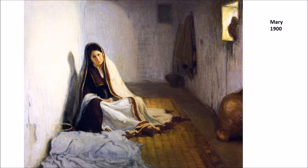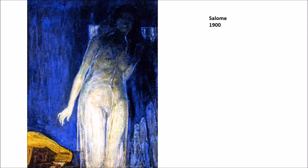Mary from 1900 exists in this wonderful space, very similar to the Mary from the Annunciation in terms of body posture and head tilt. This was the culmination of a trip he took to the Holy Land and North Africa, places like Egypt, in order to study the architecture of that area and give his biblical narratives a more realistic feel. We also have Salome from 1900, a wonderful example of his abstract work.